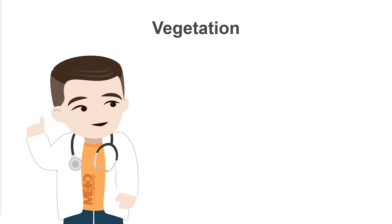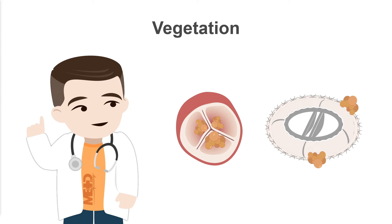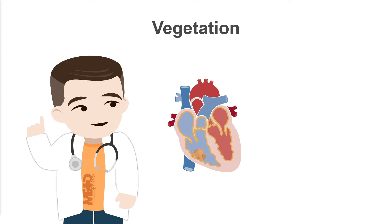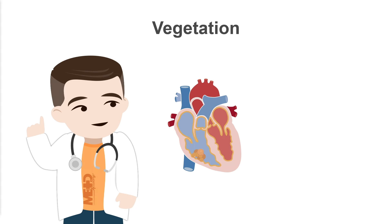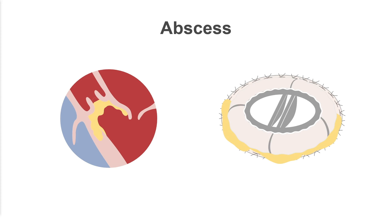Vegetations don't just affect native and prosthetic valves — they can also occur on virtually any part of the endocardium or on implanted devices. Abscesses are most often seen in the aortic root or in association with prosthetic valves.